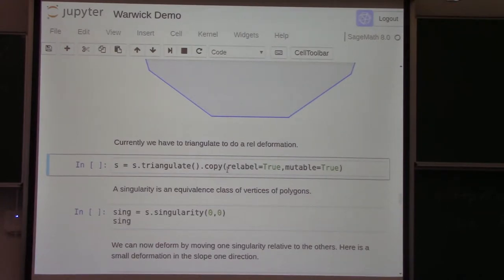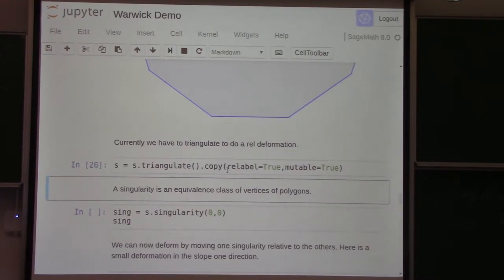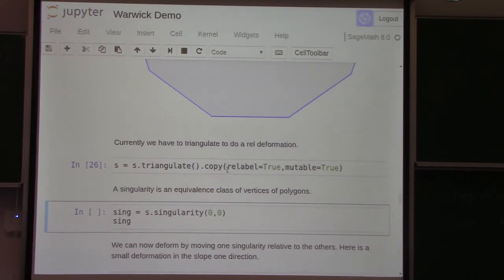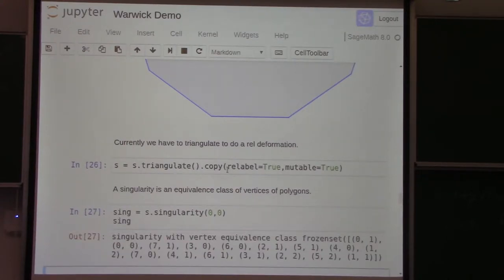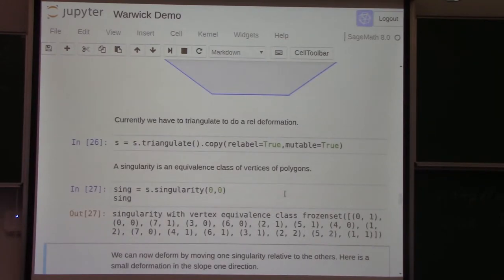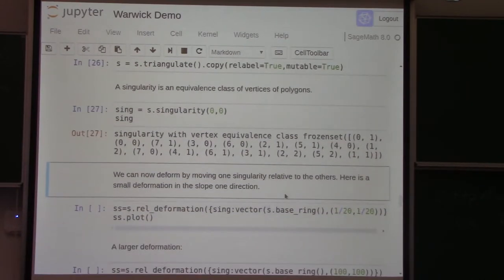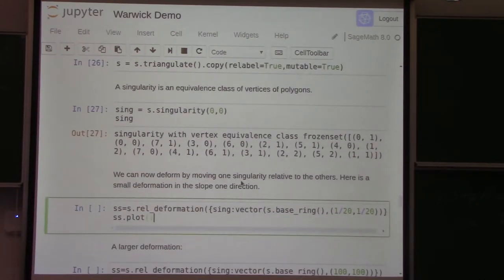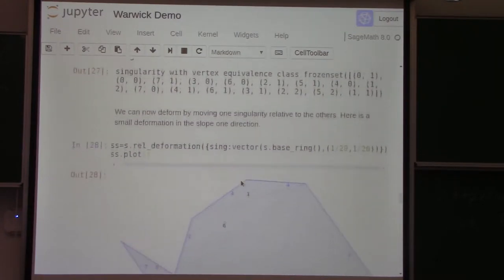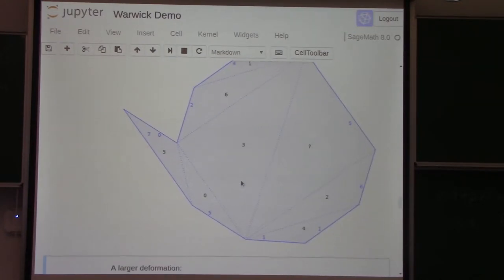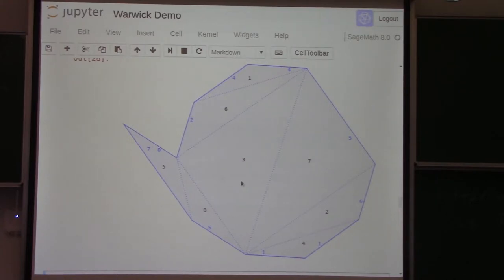And this will have the property that, you know, it preserves parallelness with the edges you're gluing together. And so you get a deformation in space, a deformation of the surface. And so our program can do this. Although, yeah, one of the problems I want to suggest is sort of improving this. I'll say that later. Let's see, so you have to triangulate it first. It's a little clunky right now. So here's, a singularity is really an equivalence class of vertices.